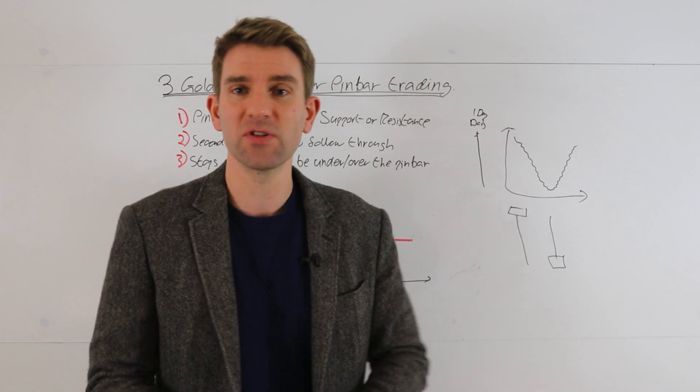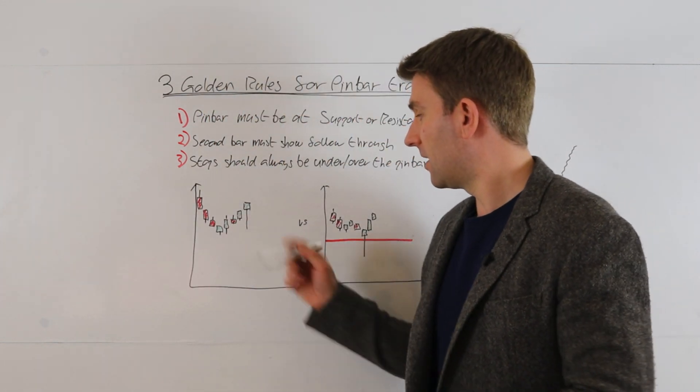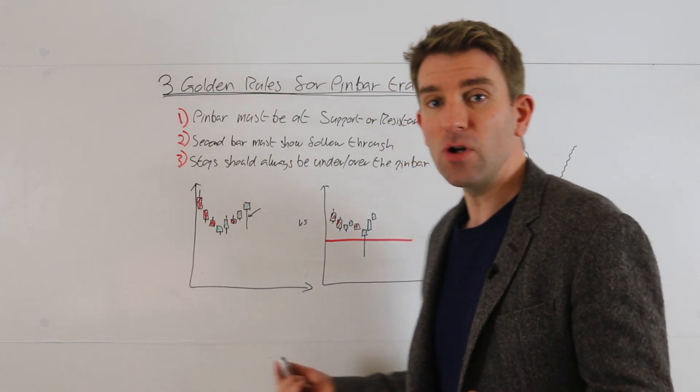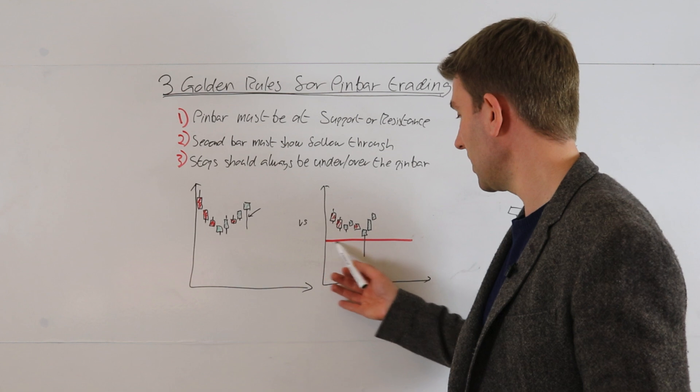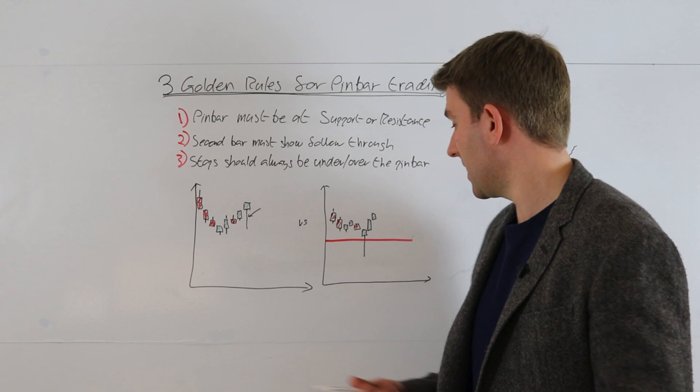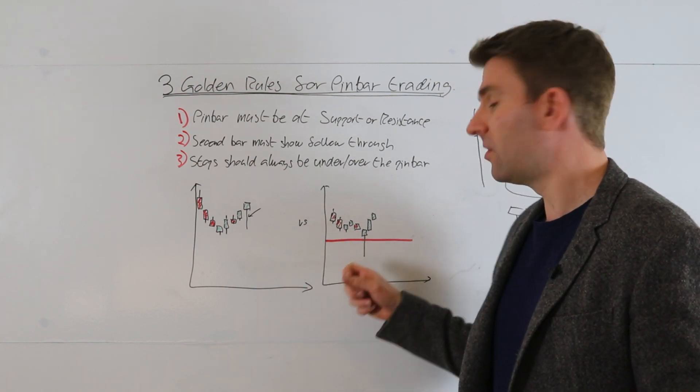The first thing is you must be at support or resistance. If you look at these charts here, you've got this kind of pin bar here that's just in the middle of no man's land. But then if you look at this one here, this is going below - let's say that's a decent level of support, prior day's low, multi-week low, whatever it may be. There's a difference there - that's much more powerful when you get a rejection of a level that everyone has been looking at.